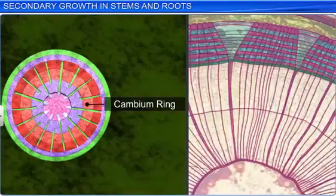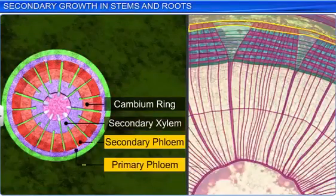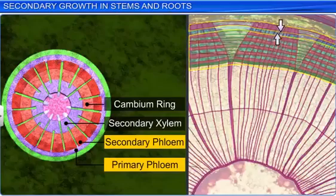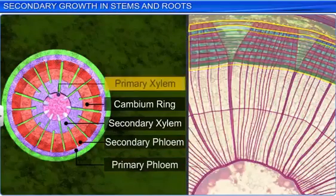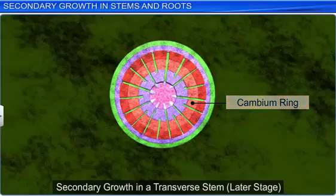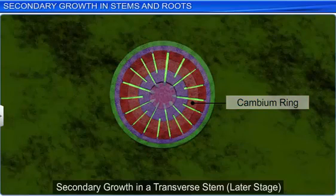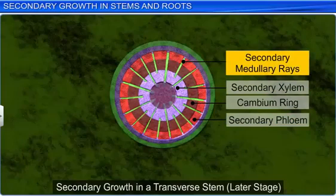Due to the continued formation of secondary xylem, primary and secondary phloem get crushed. However, primary xylem remains intact in the center. The cambium also forms a narrow band of parenchyma at some places. This band passes through the secondary xylem and the secondary phloem in radial directions, and is called secondary medullary rays.